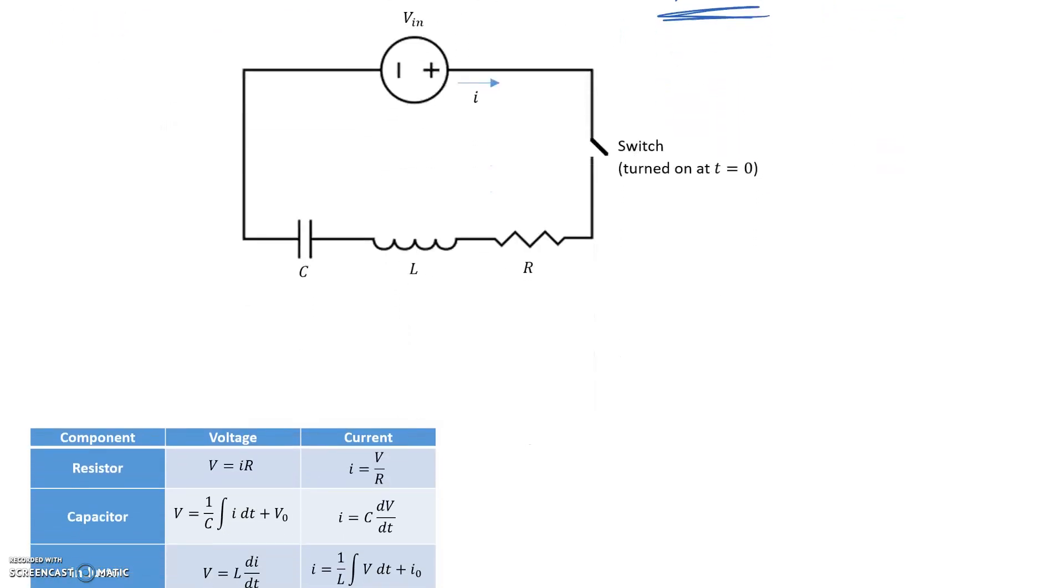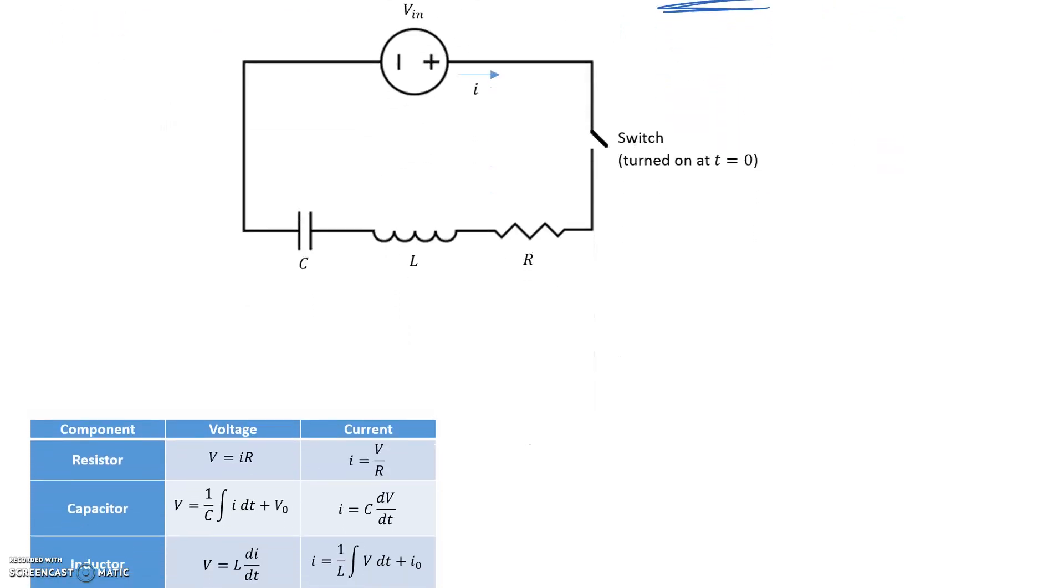The other thing I'll just quickly mention is that I've popped down here the cheat sheet for all of the equations for voltage and current based off the component that you have, which should make our lives easier when we go to substitute. So applying KVL, the equation is sum of voltages equals zero within this mesh.